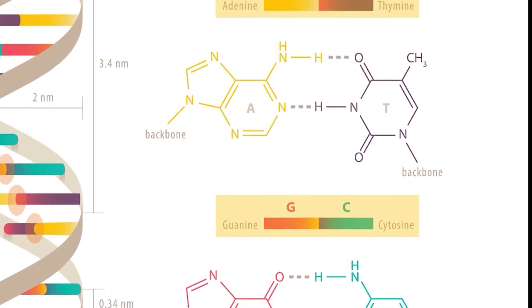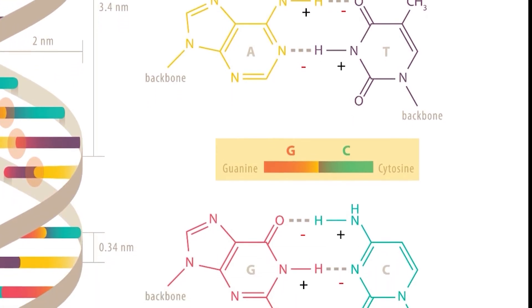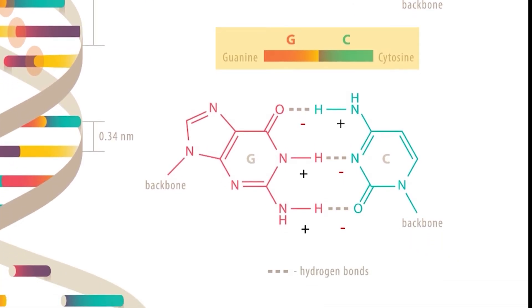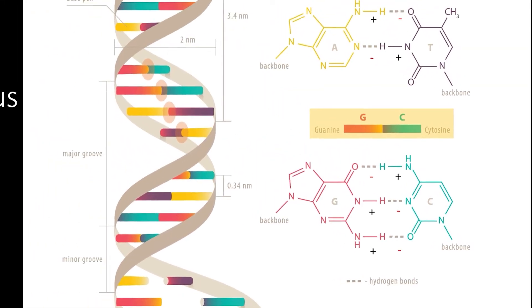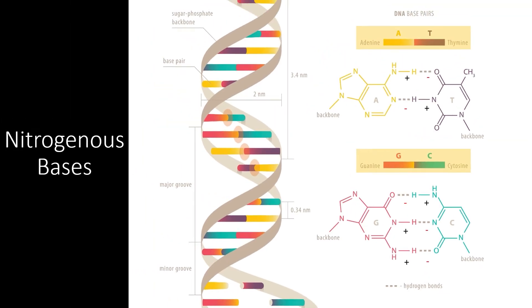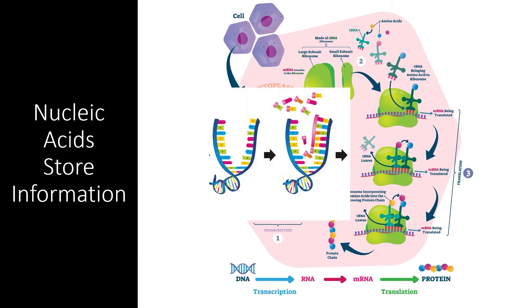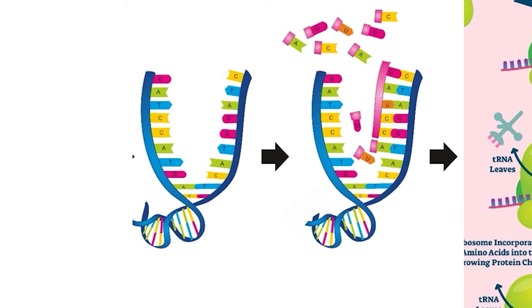Each complementary base pair has the exact opposite electrical charges compared to its complement, so these are the only combinations that can form hydrogen bonds easily. This will be very important when we learn how DNA is synthesized and how errors in the DNA code are corrected. DNA stores information through a slightly complex mechanism — it is stored in the nucleus as a double helix, which keeps it protected from damage. However, only one strand, the sense strand, actually carries the information needed to create proteins.